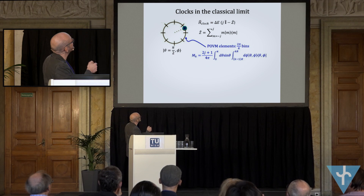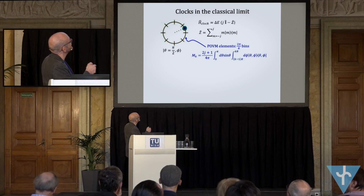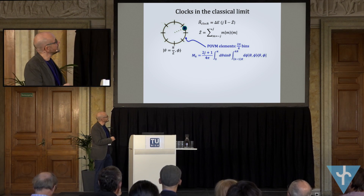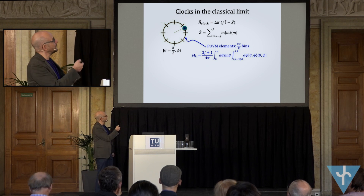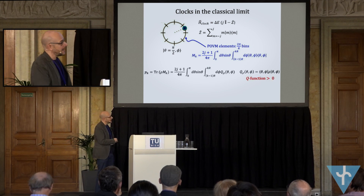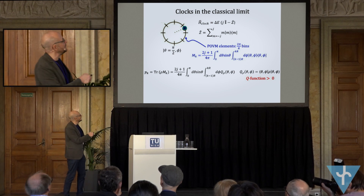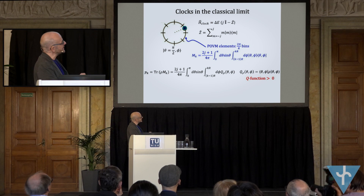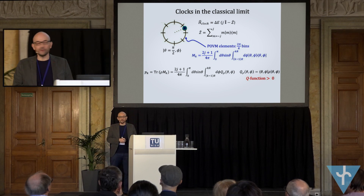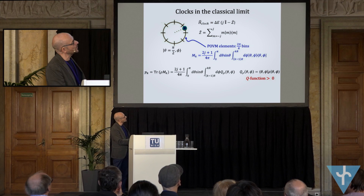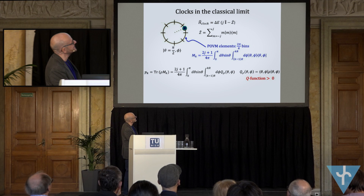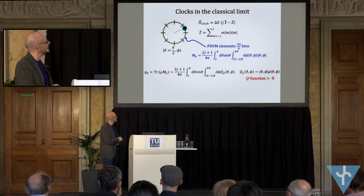To read out the time, I take POVM elements which divide the whole circle into bins of width 2π/r, where r is the width of the single time interval. This POVM element is defined by integrating over the polar angle θ and over the azimuthal angle φ only within each bin. The probability to find time k can be expressed through the Q-function — the overlap between the state and the spin coherent state — which is always positive.